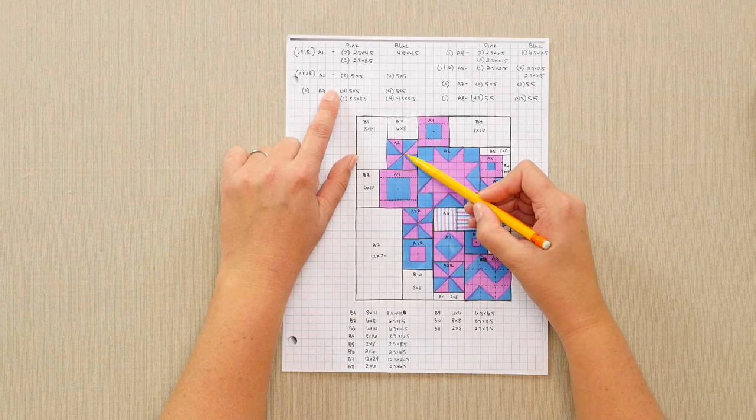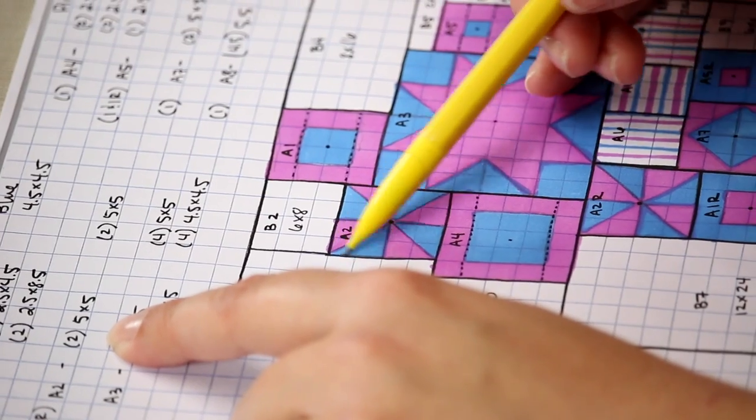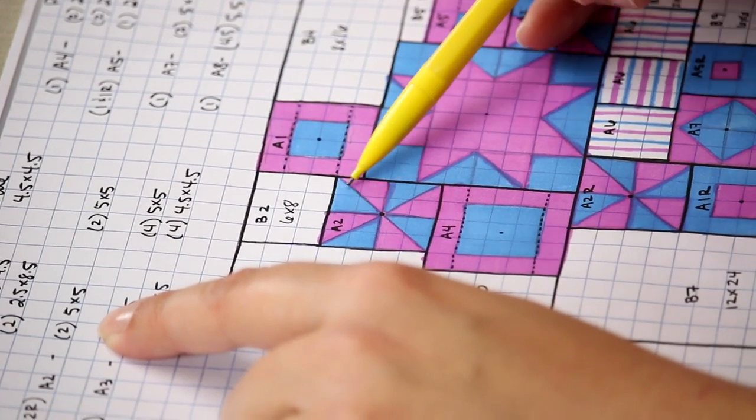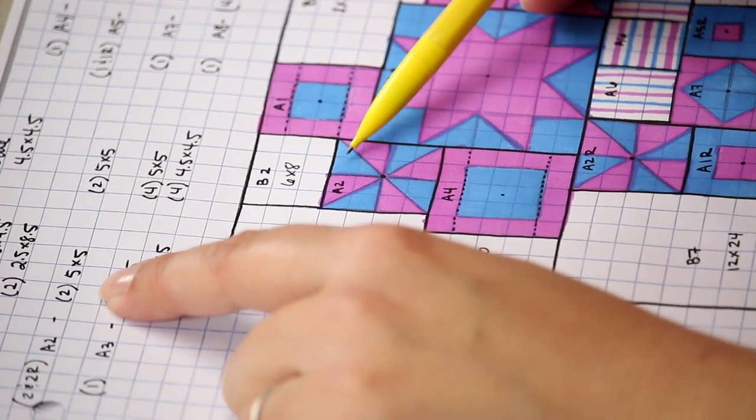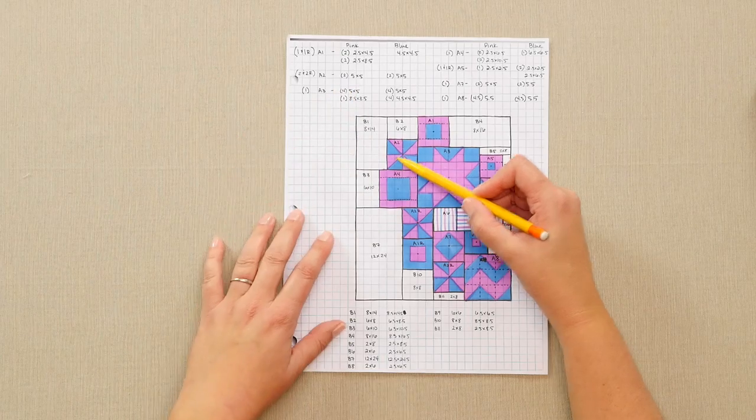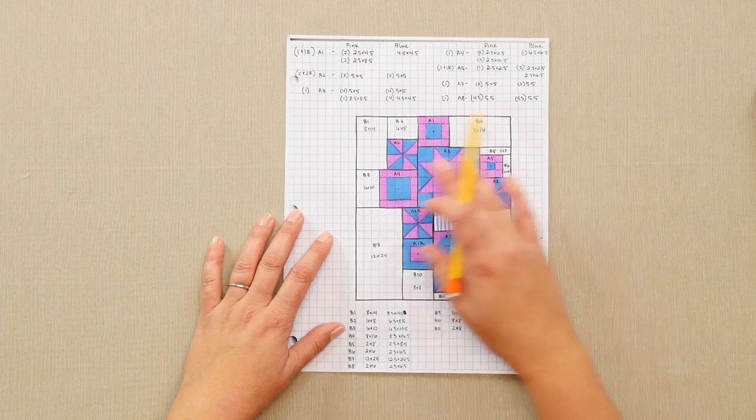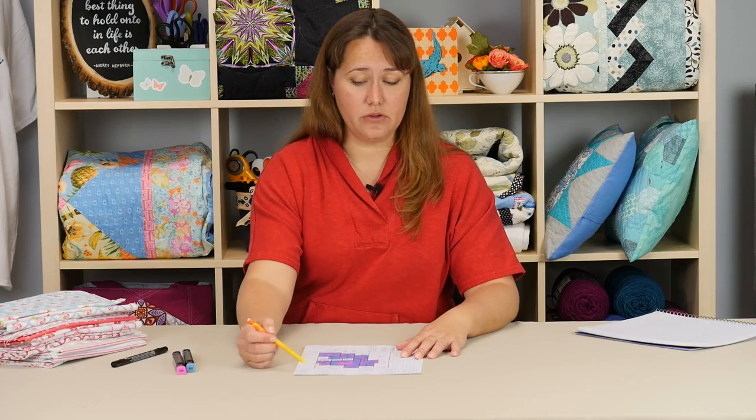My block A2 is four half square triangles. So I'll need two five by five inch pieces of the blue and two five by five inch pieces of the pink. Go through each one of your blocks. Make sure to take the time to measure out exactly what you'll need before you stitch it all together.